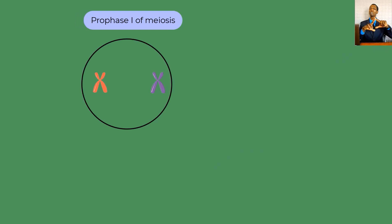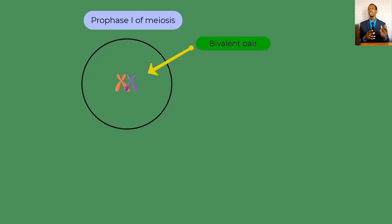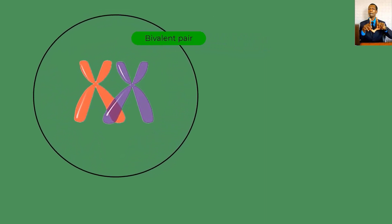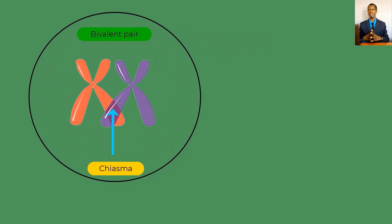Crossing over refers to the process whereby genes are transmitted from one chromosome to the other — that exchange of genes is called crossing over. It occurs during prophase one of meiosis, when homologous chromosomes associate, meaning they come into contact with one another. When they come into contact we refer to that as a bivalent pair. A bivalent pair refers to two homologous chromosomes which have come into contact with one another. The point at which they come into contact is called a chiasma; if there are many, we call them chiasmata.